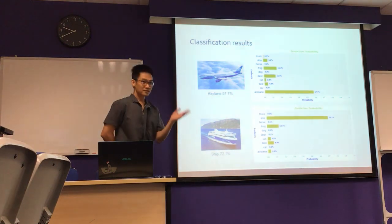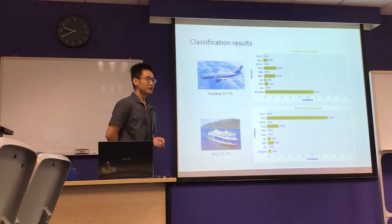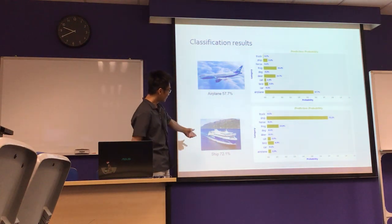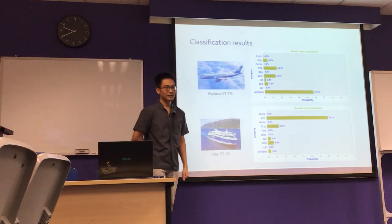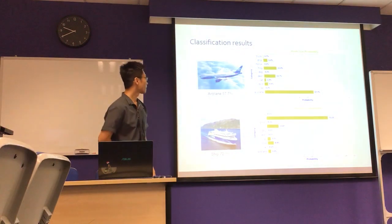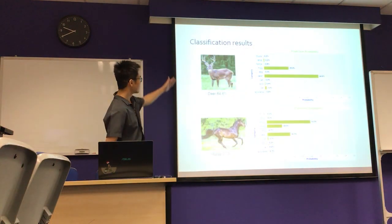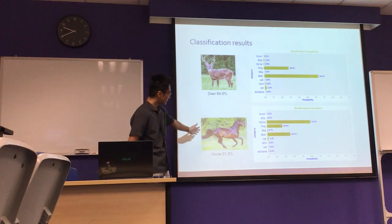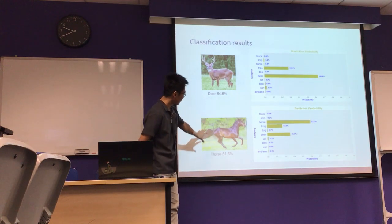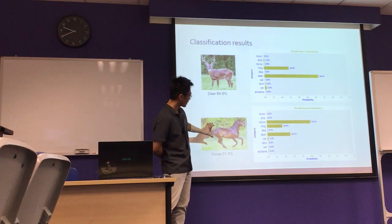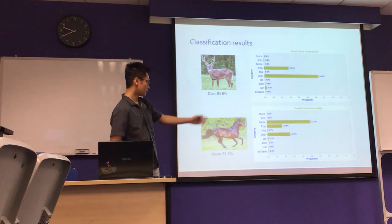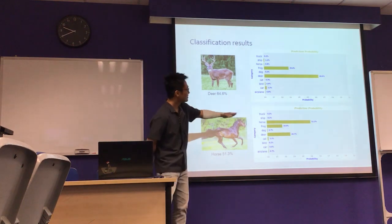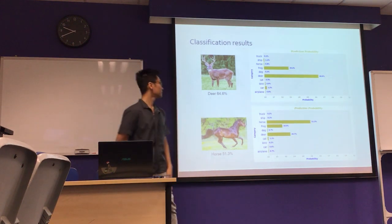In general, the model is predicting pretty well most of the time. For example, the model is 72% sure that one image is a ship, and it correctly identifies a deer and a horse. The horse may have some features of the deer, so the model picks up certain features and assigns probabilities, but according to the highest probability, this is correctly identified as a horse.